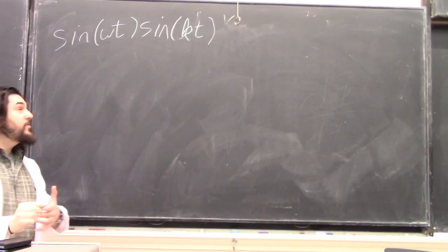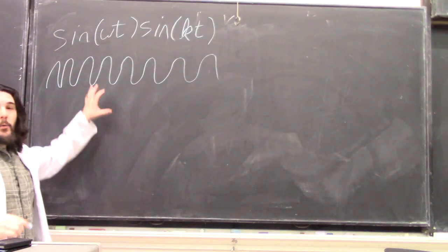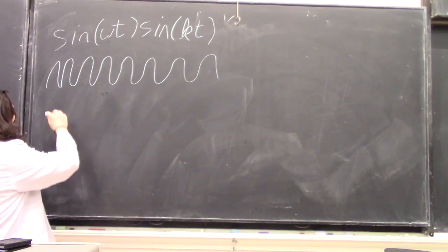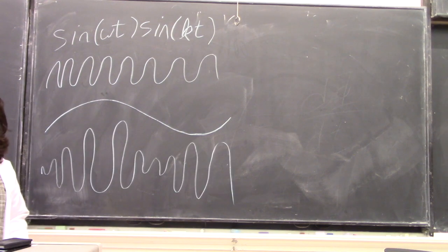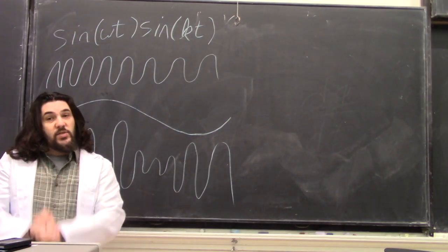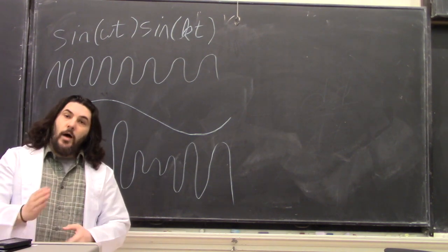So visually, we might have a very fast wave that we modulate with a very slow wave. And the result is the product of them. We can transmit information this way. For example, audio signals.